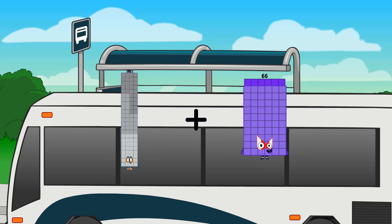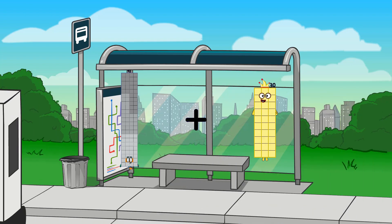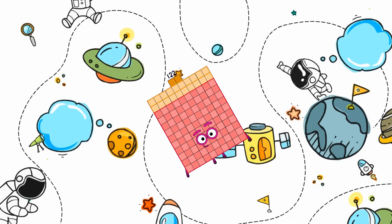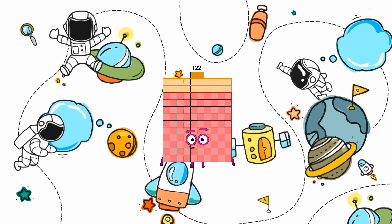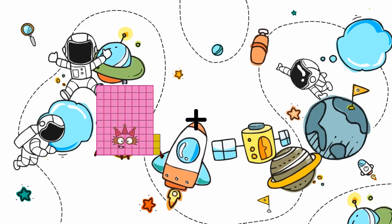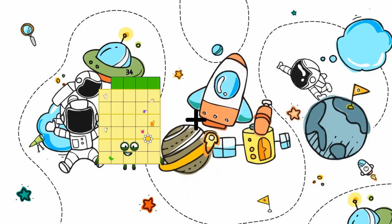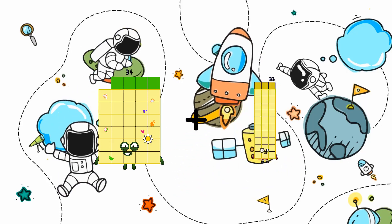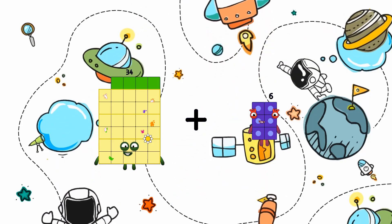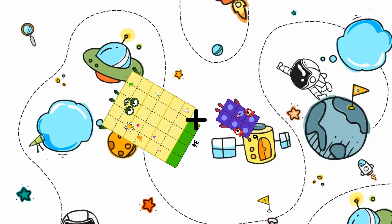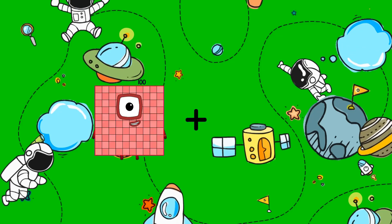92 plus 30 equals 122. 34 plus 6 equals 40.